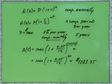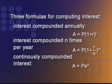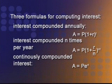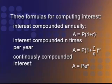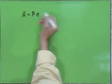There are three formulas for computing interest. Interest compounded annually: A = P(1 + r)^t. Interest compounded n times per year: A = P(1 + r/n)^(nt). And for continuously compounded interest, the formula becomes A = Pe^(rt), where e ≈ 2.718.